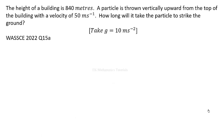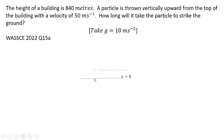Next is question 15a. The height of a building is 840 meters. A particle is thrown vertically upward from the top of the building with a velocity of 50 meters per second. How long will it take the particle to strike the ground? Let's picture the whole scenario: this is the ground level and this is the top of the building.